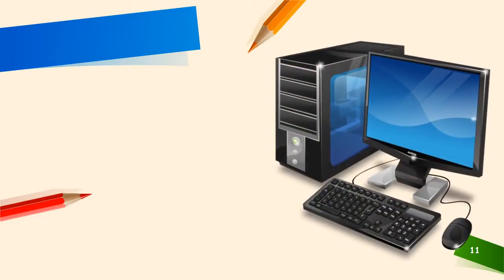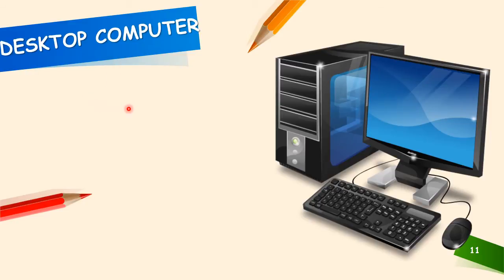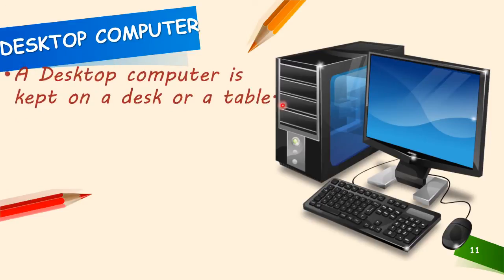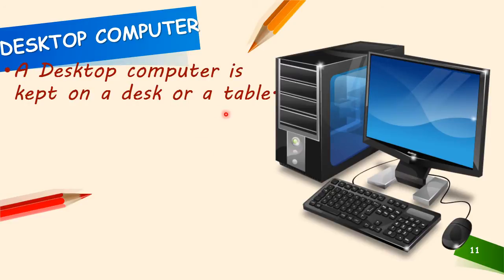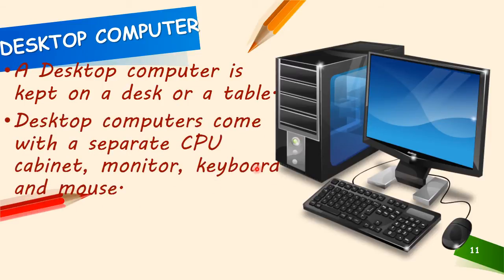Have you seen these types of computers anywhere? This is a desktop computer. From the name itself, a desktop computer is kept on a desk or a table. These desktop computers come with a separate CPU cabinet, monitor, keyboard, and mouse — all connected to the CPU cabinet with wires.